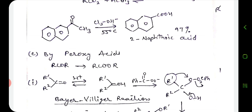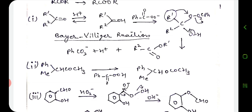Oxidation of ketones can also be done by peroxy acids to give esters or lactones. In that case, the ketone rearranges to give esters or lactones — this is the Baeyer-Villiger reaction. With peroxy acids, the mechanism involves the ketone reacting with the electron-deficient oxygen of the peroxy acid, and we get the corresponding esters and lactones.